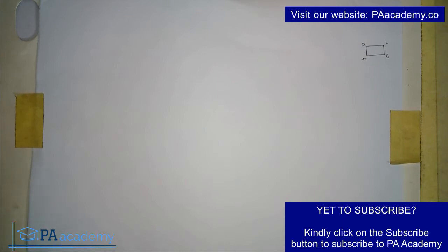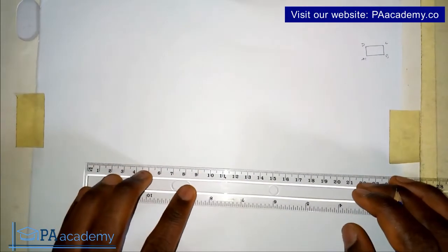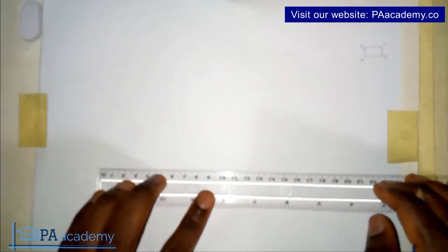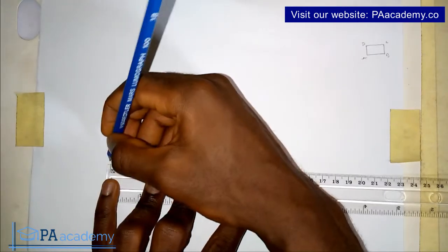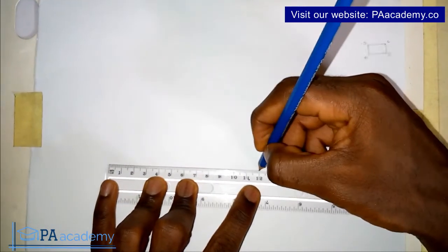So what we are going to be using to illustrate what I've just said earlier. I'm going to be drawing a rectangle with a side of 12 cm by 8 cm. So let me quickly do that. So this is my 12 cm.